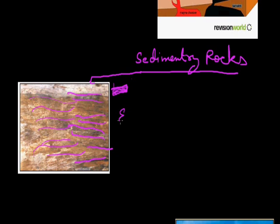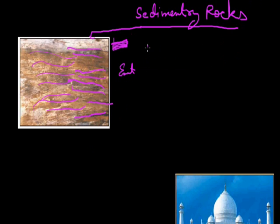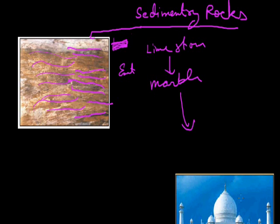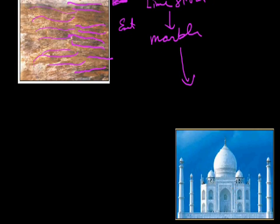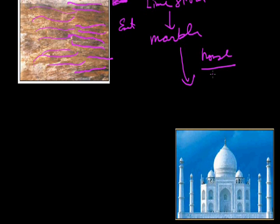For example, limestone can change into marble. You can see here a picture of the Taj Mahal, which is made up of marble — so it is a sedimentary rock that changed its form. Marble can be sedimentary as well as metamorphic. Other rocks like many hard rocks are useful for making houses, roads, etc.